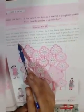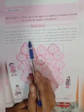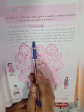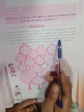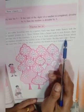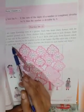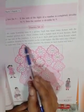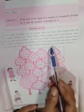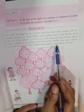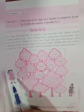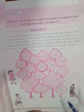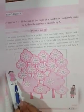Each child picks those flowers which have numbers divisible by the number on his or her basket. He or she takes only one flower from each tree. Can you tell which numbers the flowers in each basket will have?